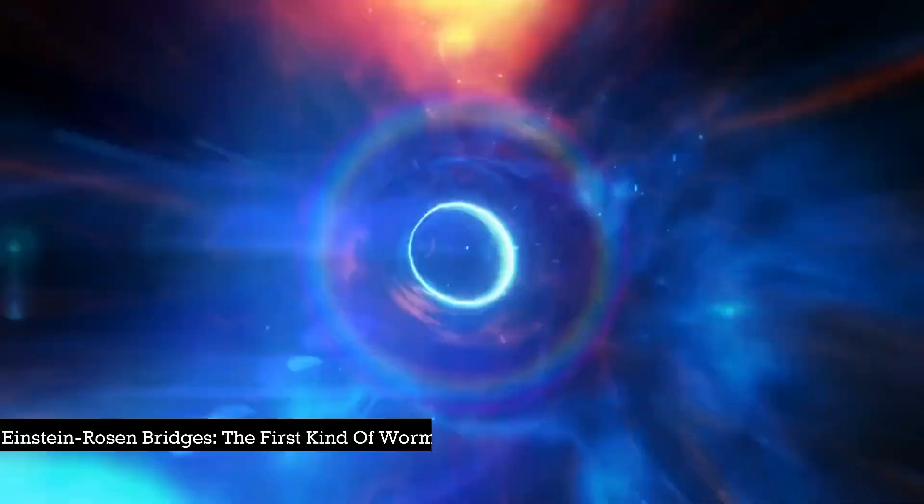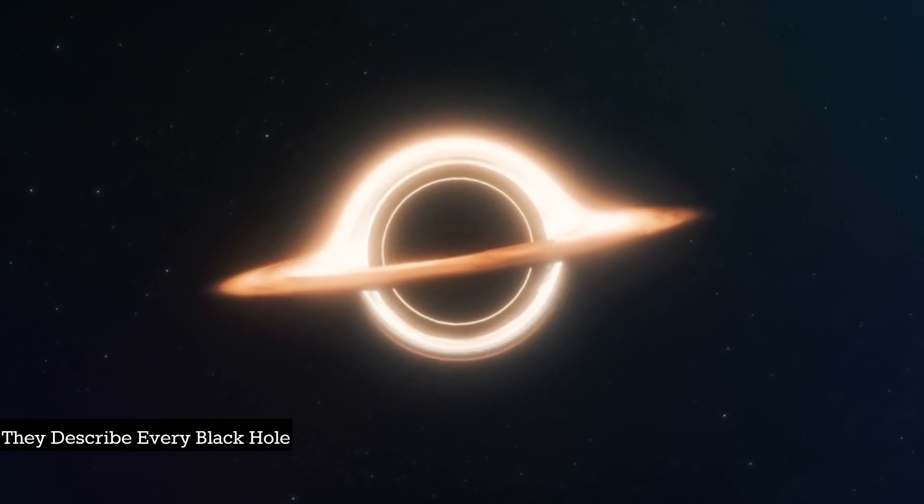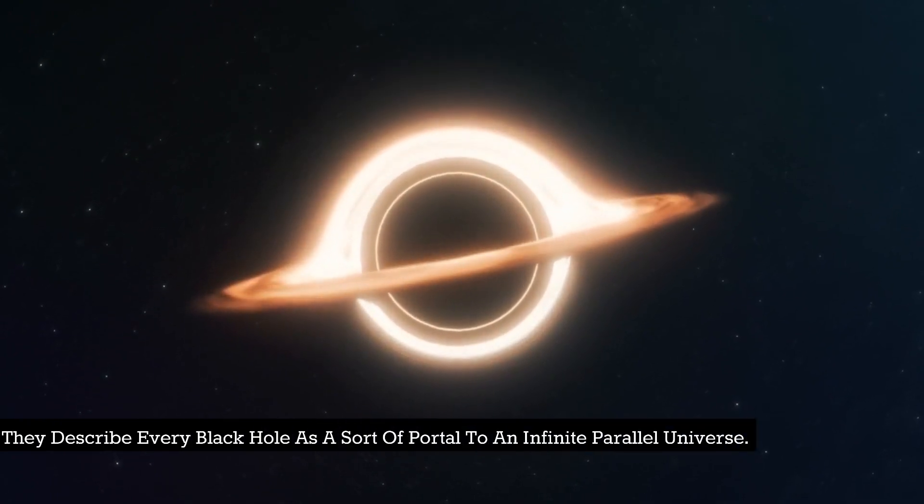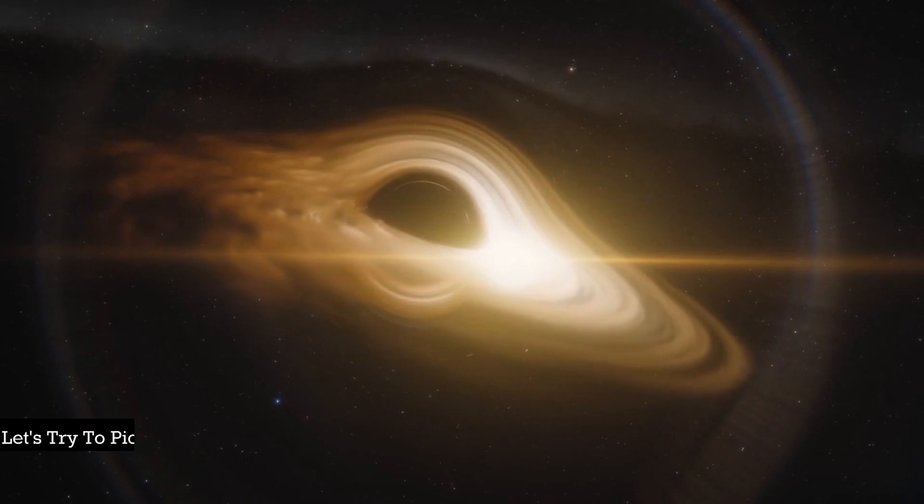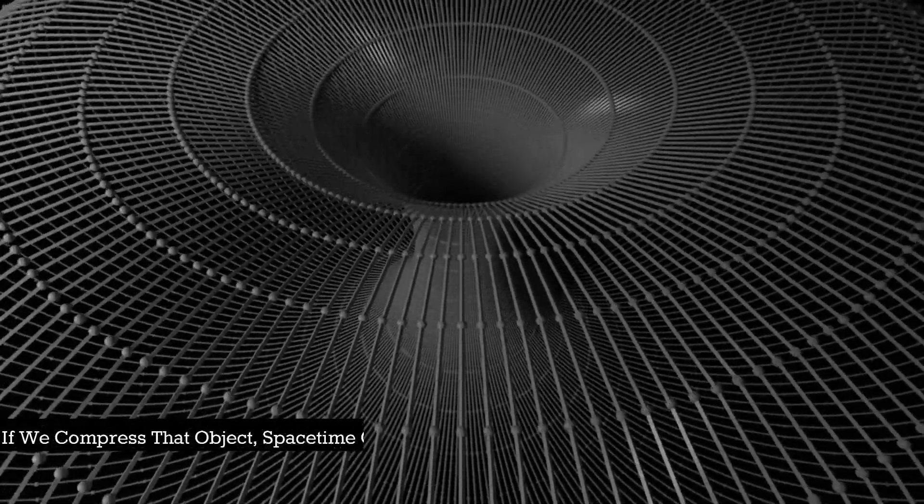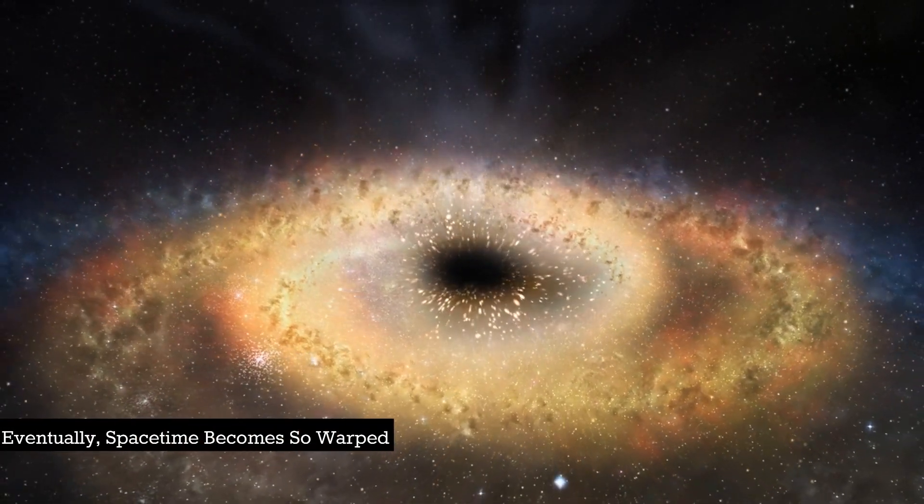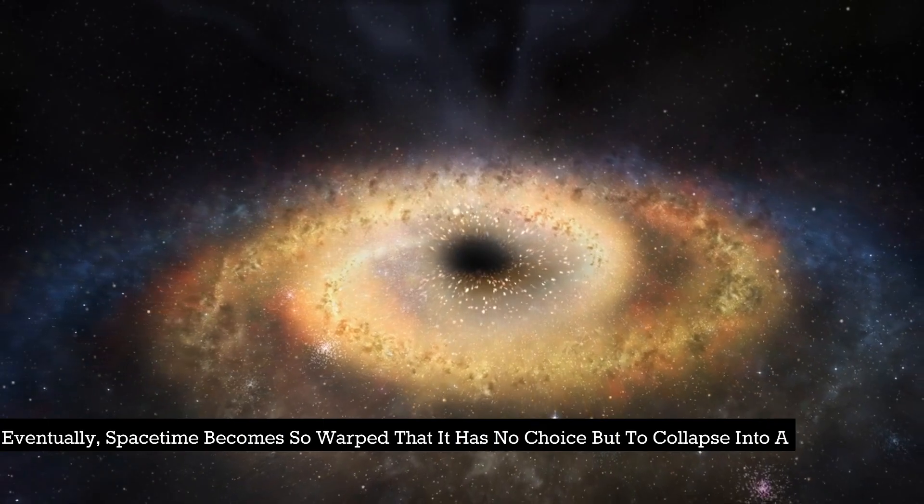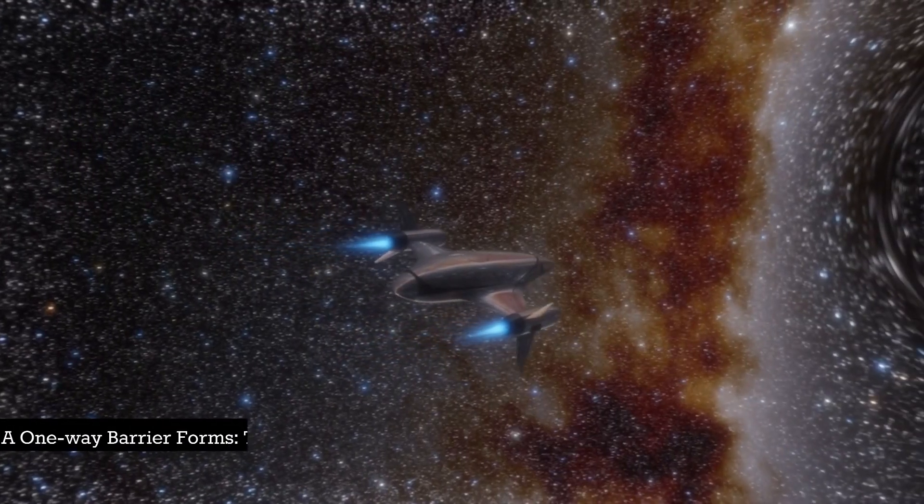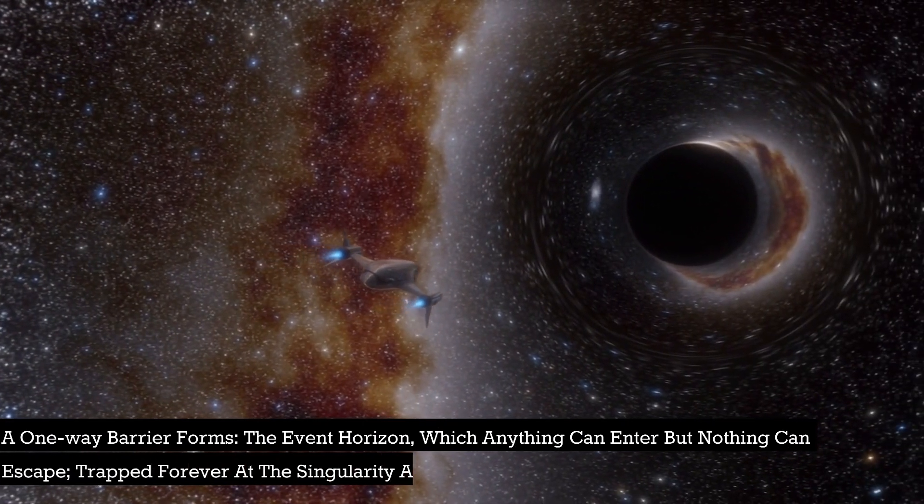Einstein-Rosen bridges - the first kind of wormholes to be theorized - describe every black hole as a sort of portal to an infinite parallel universe. Let's try to picture them in 2D again. Empty space-time is flat but curved by objects on it. If we compress that object, space-time gets more curved around it. Eventually, space-time becomes so warped that it has no choice but to collapse into a black hole. A one-way barrier forms - the event horizon - which anything can enter but nothing can escape, trapped forever at the singularity at its core.